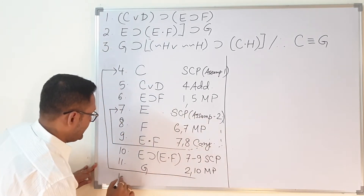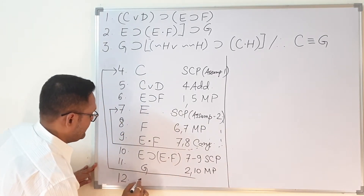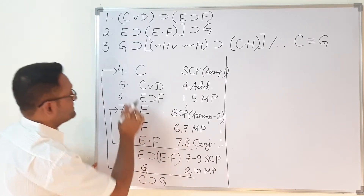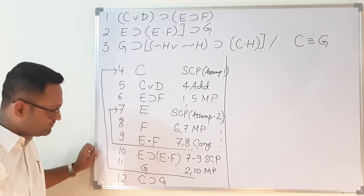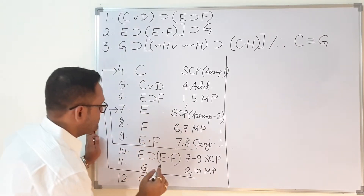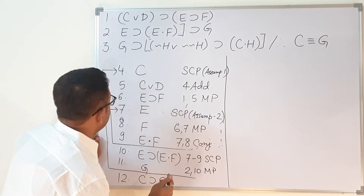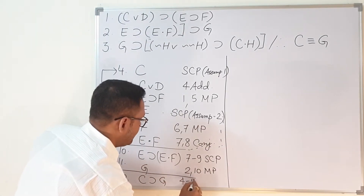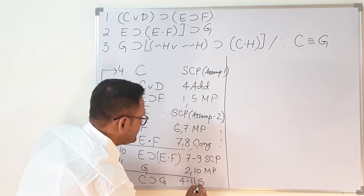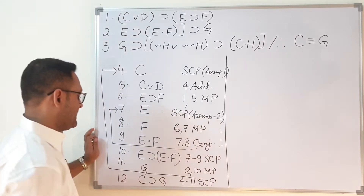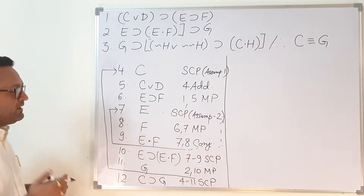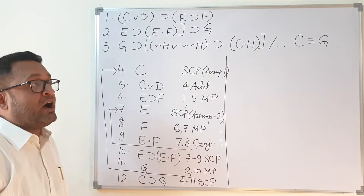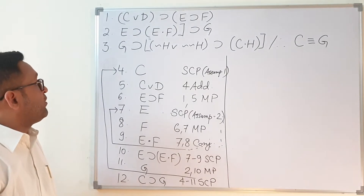On line number 12, I write C implies G, because from the assumption C I have derived G. This is from lines 4 to 11 by SCP. So one part of the question is over.